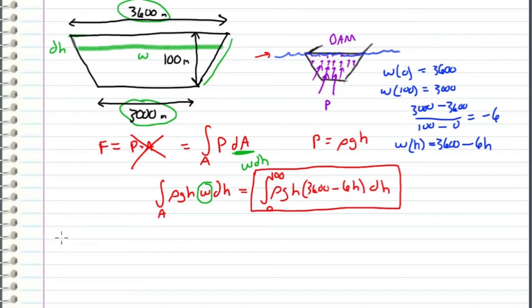Let's assume that ρ of water equals 1000 kg/m³ and g equals 9.8 m/s². Then we can plug in values into this integral.